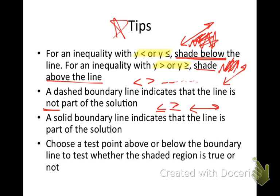What is one of the best test points to always choose? Zero, zero. Typically the best test point to always choose is (0, 0) — that would always be a good one.